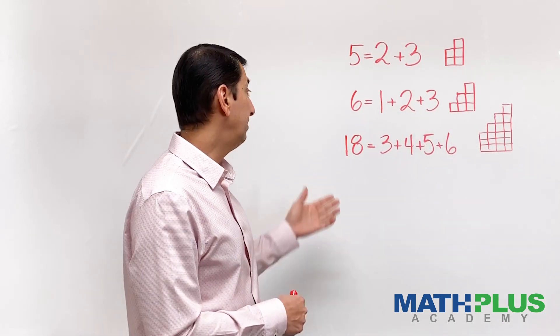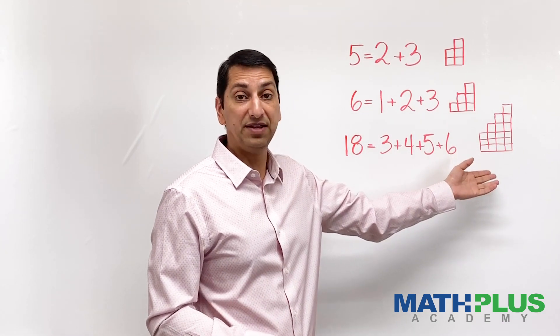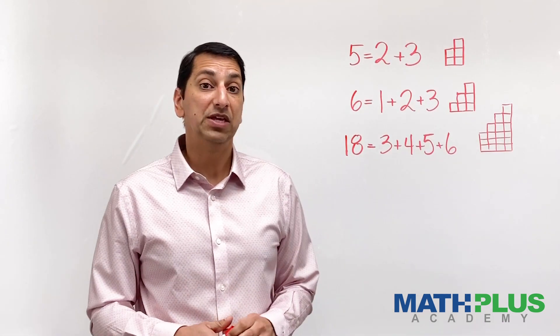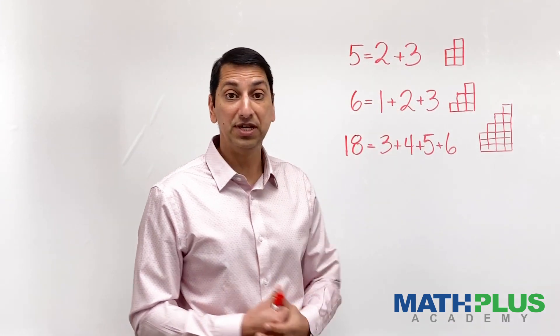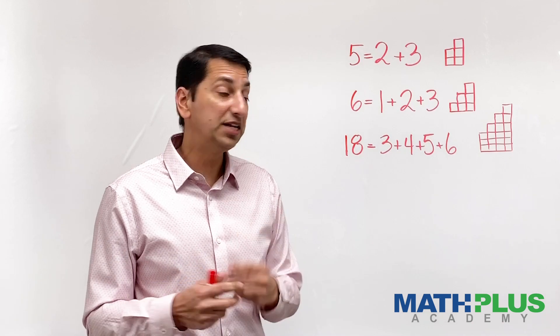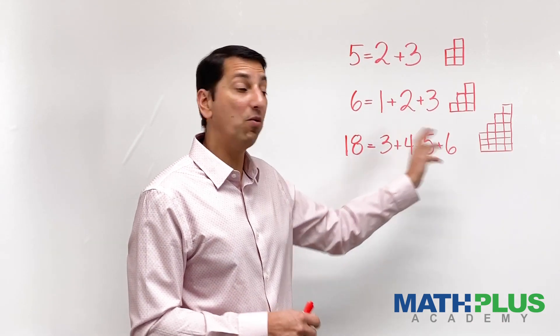And finally, I have 18, which is 3 plus 4 plus 5 plus 6 and a picture of that as well. Now, you might be noticing some things. First of all, I'm always using addition in these things. And second of all, the numbers that I'm using over here are consecutive. They're in order.